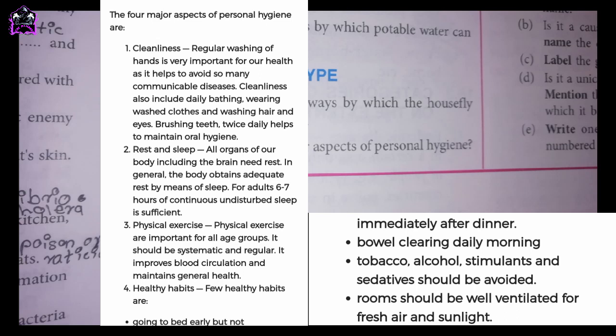Brushing teeth twice daily helps to maintain oral hygiene. 2. Rest and sleep. All organs of our body, including the brain, need rest. In general, the body obtains adequate rest by means of sleep. For adults, 6 to 7 hours of continuous undisturbed sleep is sufficient.